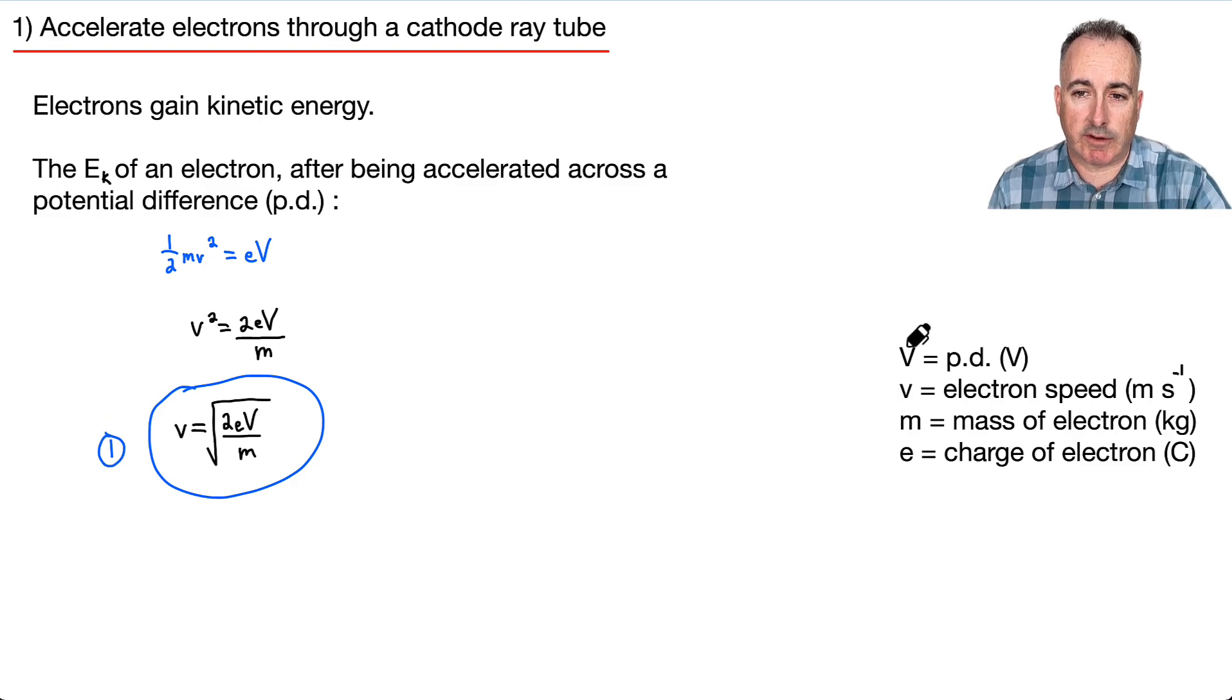If we look at the units, capital V is a potential difference in volts. v is the electron speed in meters per second. M is the mass of the electron. If you're doing a question on an exam, you can look that up in the data booklet. So is the charge of an electron, which is 1.6 times 10 to the minus 19 coulombs. They didn't know this at the time, so we'll just leave it like this.